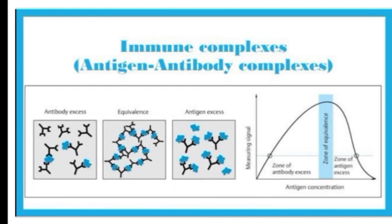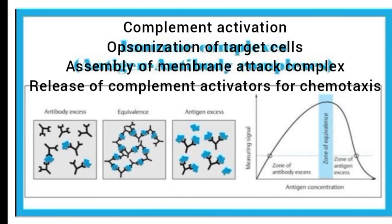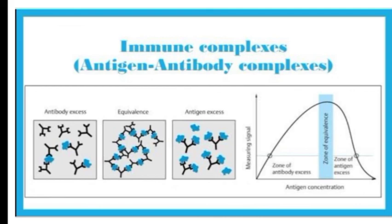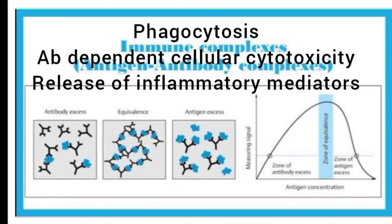An immunocomplex is formed from the integral binding of an antibody to a soluble antigen. The binding of an antigen acting as a specific epitope bound to an antibody is referred to as a singular immunocomplex. The mechanism of antigen-antibody immunocomplex formation results in complement activation, opsonization of target cells, assembly of membrane attack complexes, and release of complement activators for chemotaxis. Fc receptor-mediated cell activation triggers cellular responses such as phagocytosis and antibody-dependent cellular cytotoxicity (ADCC), and release of inflammatory mediators.